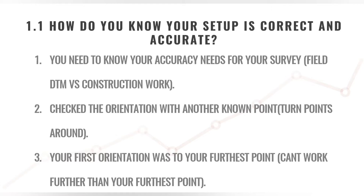The second point is to check the orientation with another known point. This means that you use a third independent known point to verify that your setup has been correct and is within the desired accuracy of the work you will be doing. We always do this because if we have a third point that confirms our setup is correct, we know everything is correct.